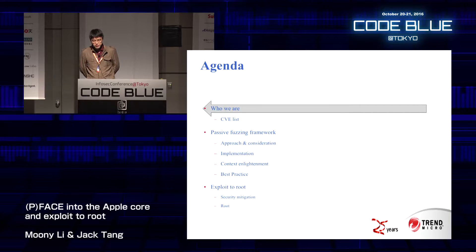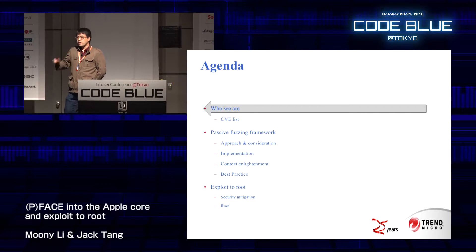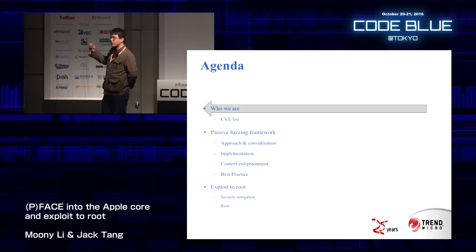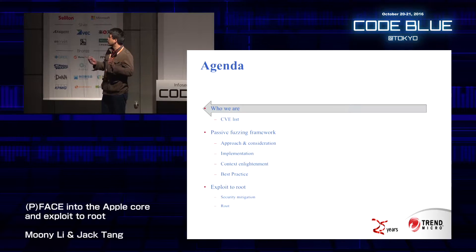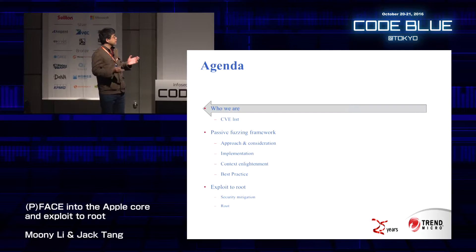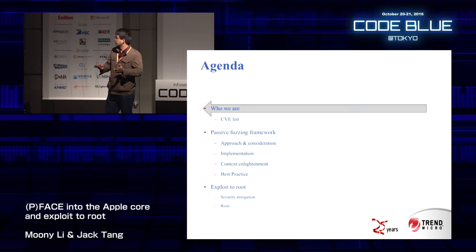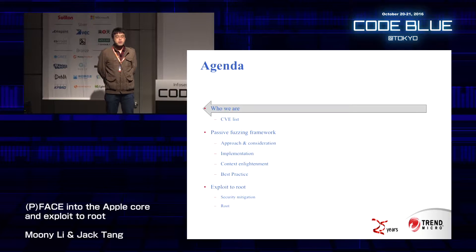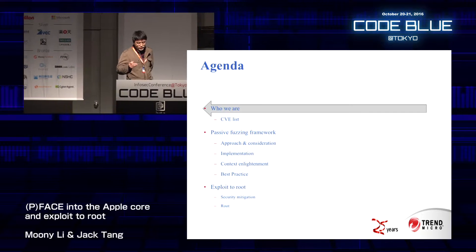This is my agenda. First I will introduce a little about me and my partner. Second, I will introduce our passive fuzzing framework: how we designed the approach and considerations, and how we implemented it in detail. We will also introduce best practices or tips during our fuzzing activities, and finally how we exploit the vulnerabilities found using the passive fuzzing framework and how we rooted an OS X machine.